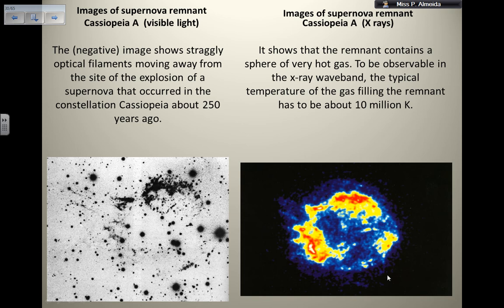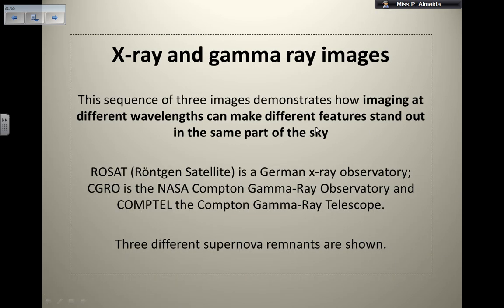I could never be able to understand that just by looking at a visible image. But here, because these colors are being captured, they need me to have a minimum of 10 million Kelvin of temperature. So, as I told you already, imaging at different wavelengths can make different features stand out in the same part of the sky, and therefore, I can get more information about whichever object I am looking for.